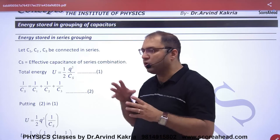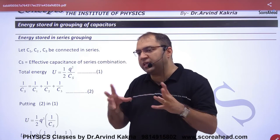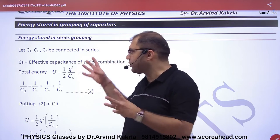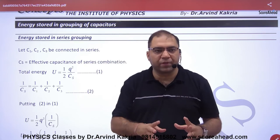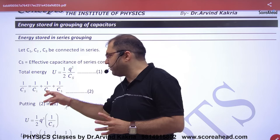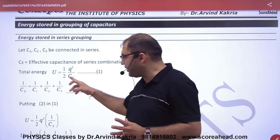In this case, total energy when the capacitors are in series, what have you put? Half Q squared by Cs. So in this case, 1 by Cs equals 1 by C1, 1 by C2, 1 by C3, and multiply it.